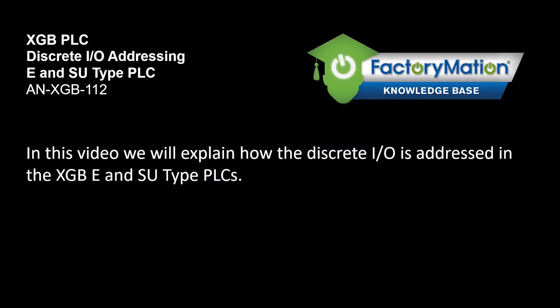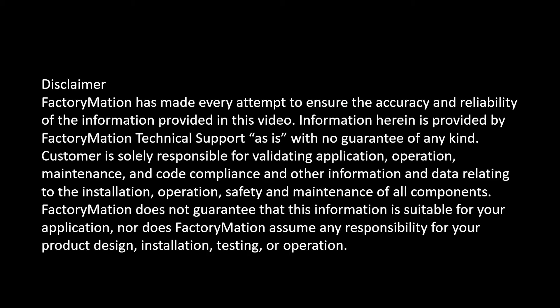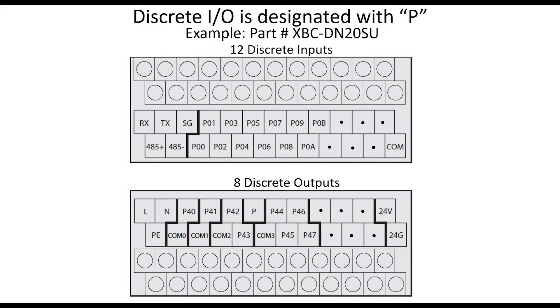In this video we will explain how the discrete I/O is addressed in the XGB E and SU type PLCs. In the LS XGB PLCs, all discrete inputs and outputs are designated with the letter P.